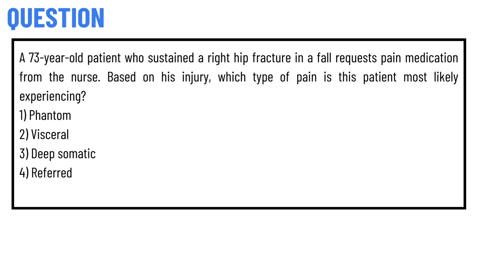Our today's question is: A 73-year-old patient who sustained a right hip fracture in a fall requests pain medication from the nurse based on his injury. Which type of pain is this patient most likely experiencing? Option 1: Phantom. Option 2: Visceral. Option 3: Deep Somatic. Option 4: (implied).